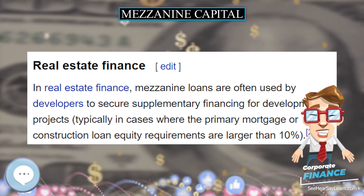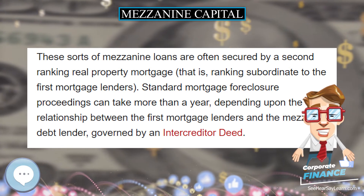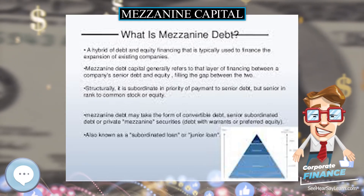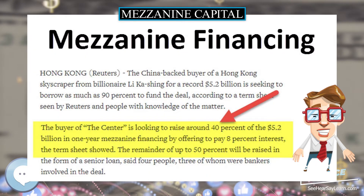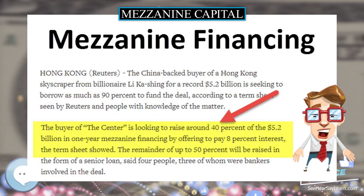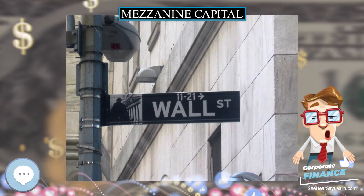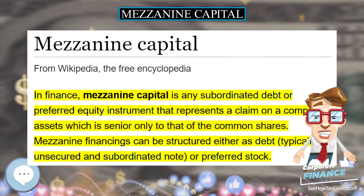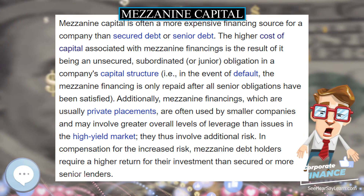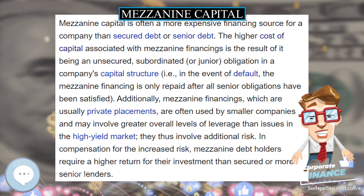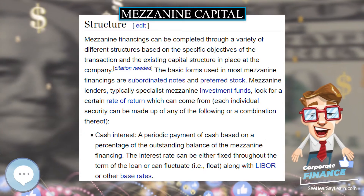As a result, by using equity ownership and PIK interest, the mezzanine lender effectively defers its compensation until the due date of the security or a change of control of the company. Mezzanine financings can be made at either the operating company level or at the level of a holding company, also known as structural subordination. In a holding company structure, as there are no operations and hence no cash flows, the structural subordination of the security and the reliance on cash dividends from the operating company introduces additional risk and typically higher cost.